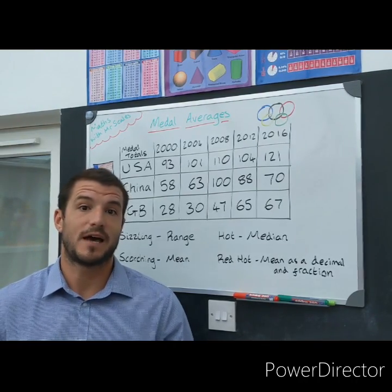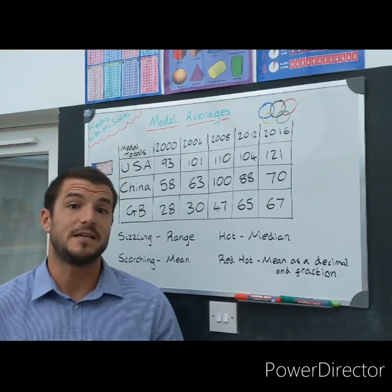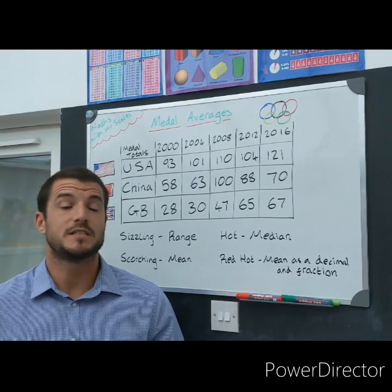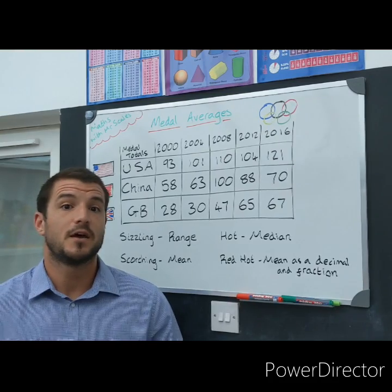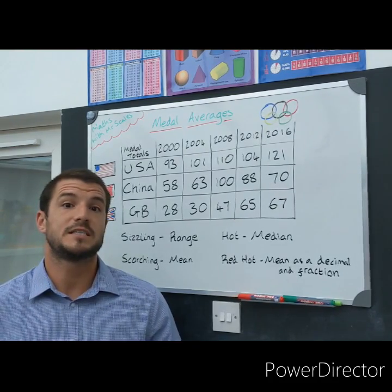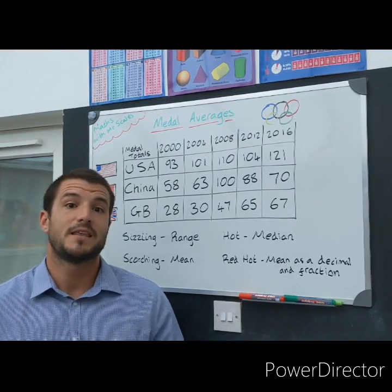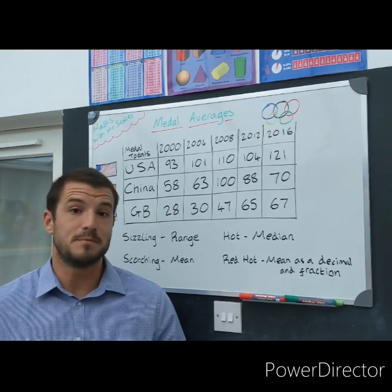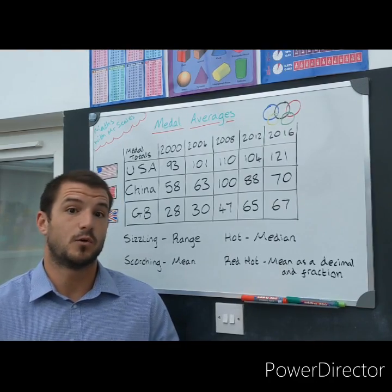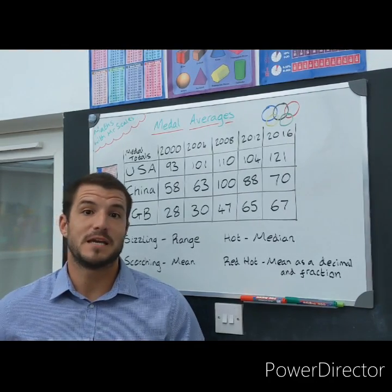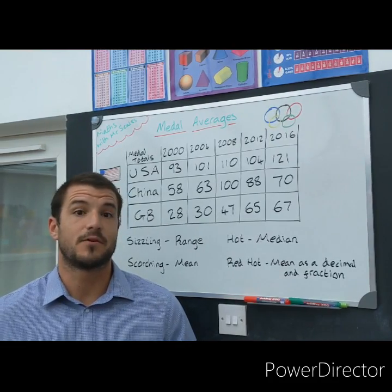Now there are lots of different types of average. Generally when people speak about average they're talking about the mean, but there is mode, which is the most common number that appears — we're not going to focus on that today. There is range, which is the largest number take away the smallest number. There is median, which is the middle number when you've put all of the numbers in ascending order. And then there is the mean, which is when you add all of the numbers up together and divide by how many numbers you have.